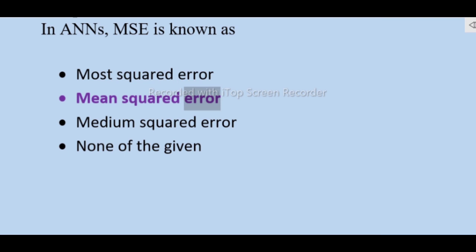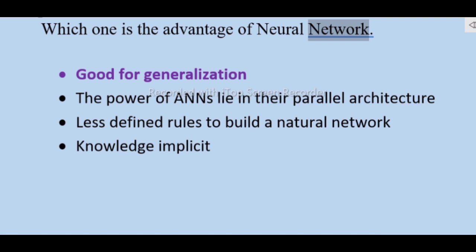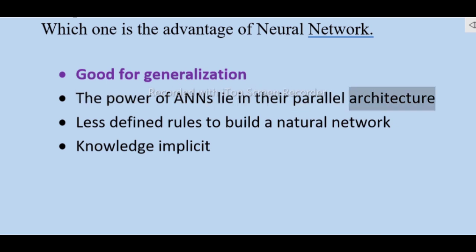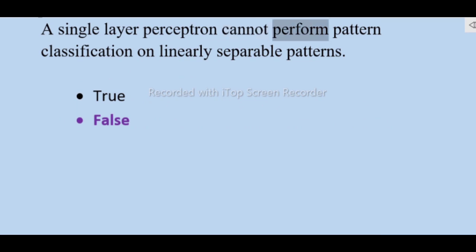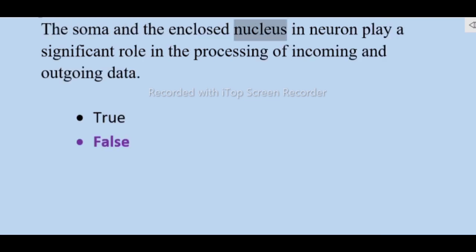Which one is the advantage of neural networks? Good for generalization. The power of neural networks lies in their parallel architecture, less defined rules to build a neural network, knowledge implicit. A single layer perceptron cannot perform pattern classification on linearly separable patterns — true or false?